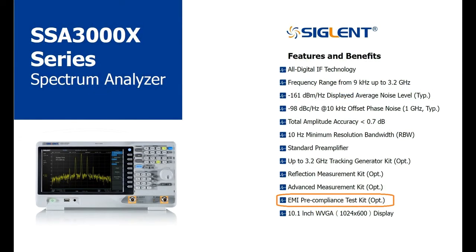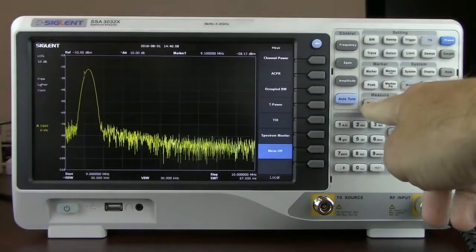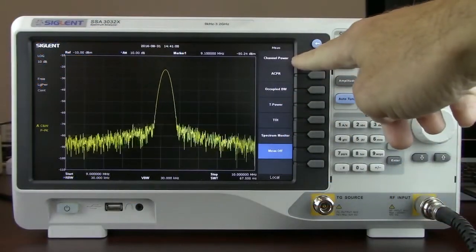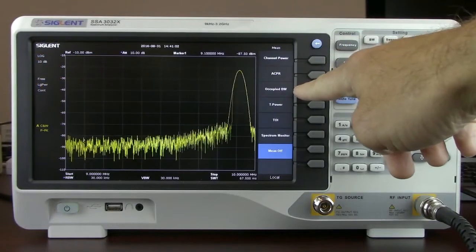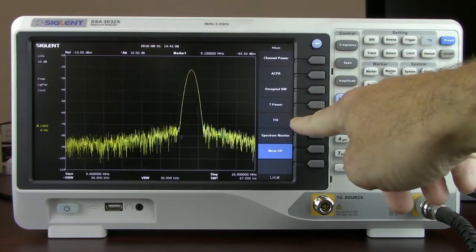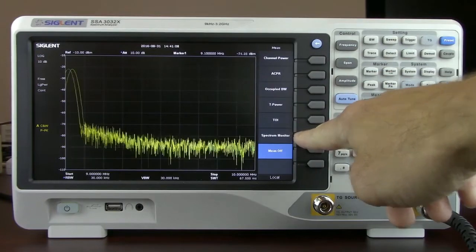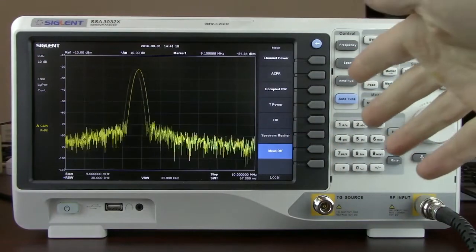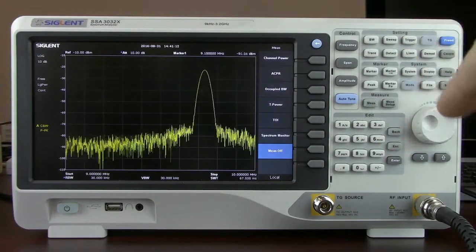The SSA 3000s are also available with the Advanced Measurement Kit or AMK option. The AMK option includes a number of standard measurements used in broadcasting. If we press the measure key, we'll see channel power, adjacent channel power, occupied bandwidth, total power, third order intercept, and spectrum monitor. I'd like to show the spectrum monitor because this is also a feature that isn't available on many other spectrum analyzers.